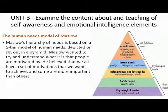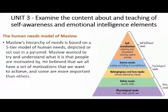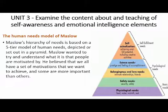The third tier is about belongingness and love needs — the psychological part of a person — including intimate relationships, friends, parents, teachers, anything that shows you belong somewhere and are loved. The fourth tier is esteem needs — experiencing a feeling of accomplishment that boosts your self-esteem and confidence. The last tier is about self-fulfilment, where each person has their own idea of what they want to achieve and works towards that goal to become more self-actualised.